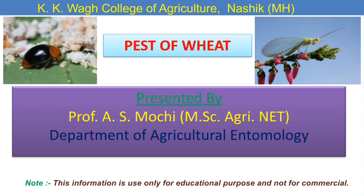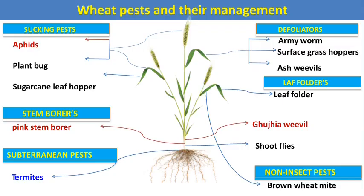Hello friends, welcome you all. Today we are going to learn about the pests of wheat and their management. Wheat is one of the major cereal crops in the Rabi season, and it is infested by a number of major and minor insect pests which cause severe yield loss.